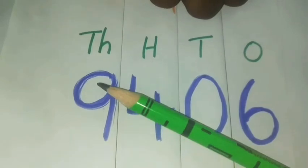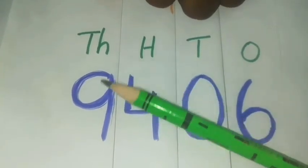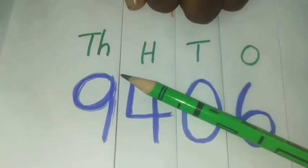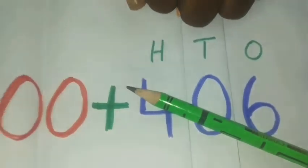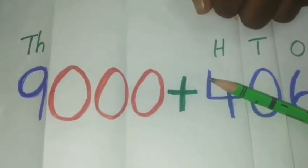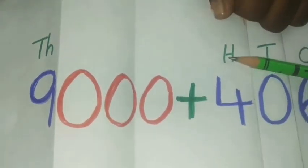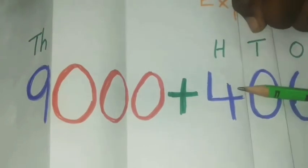First, what is the place value of 9? 9406. It is in 1000 place. So, 9000. Now, 4 is in 100 place. So, what is the place value of 4? 400.